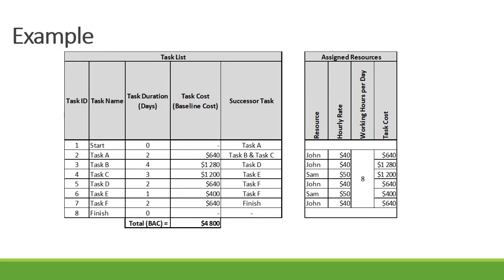So let's have a look at the example. We've got task A to task F, each task has got a duration, then we've got our baseline cost or total cost, and the total cost is calculated from the assigned resources. For task A, John has been assigned at a rate of $40 per hour, and the working hours per day is 8 hours, so it's 40 times 8 = 320, times 2 days = $640.